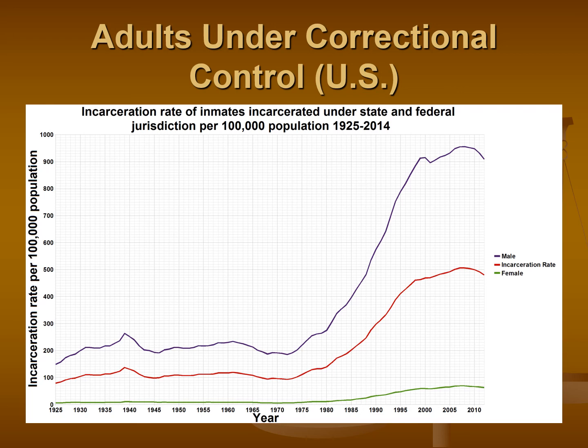Looking at this slide, this is the incarceration rate of inmates incarcerated under both state and federal jurisdiction per 100,000 in the population over roughly the last century — from 1925 up through 2014. There are three different lines: the purplish line at the top represents males, the green line at the bottom represents females, and the red line in the middle captures both genders and the overall incarceration rate.